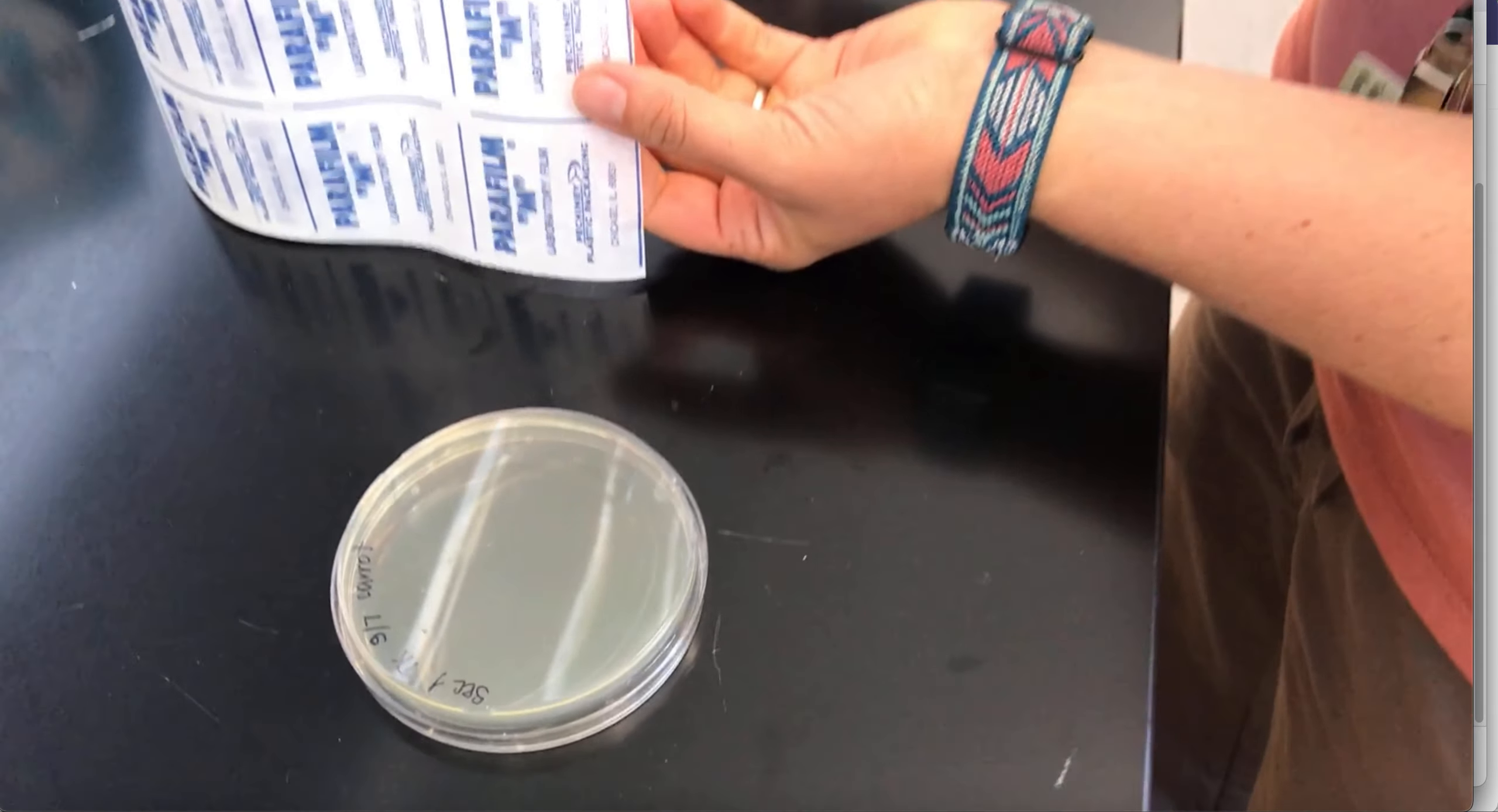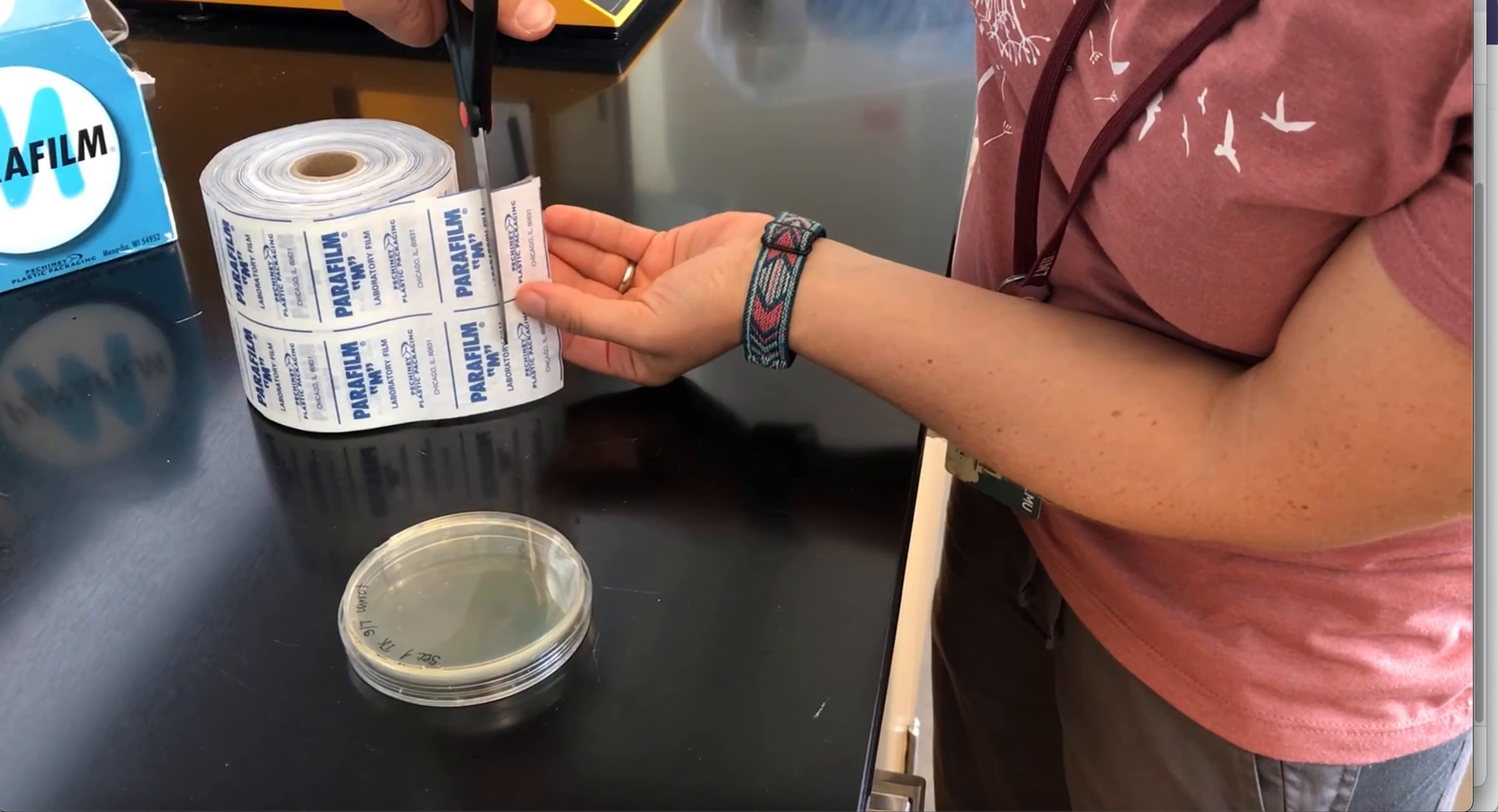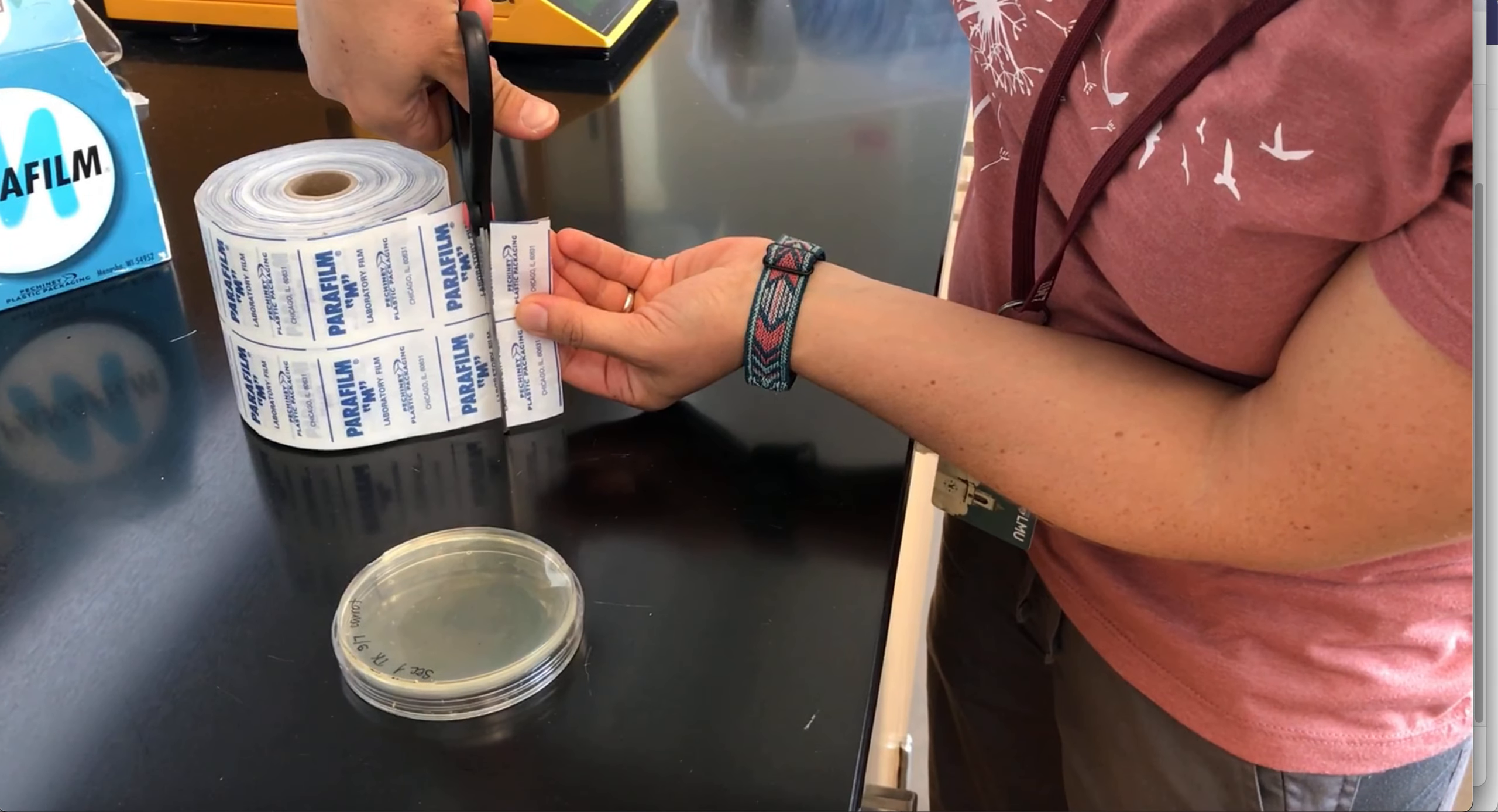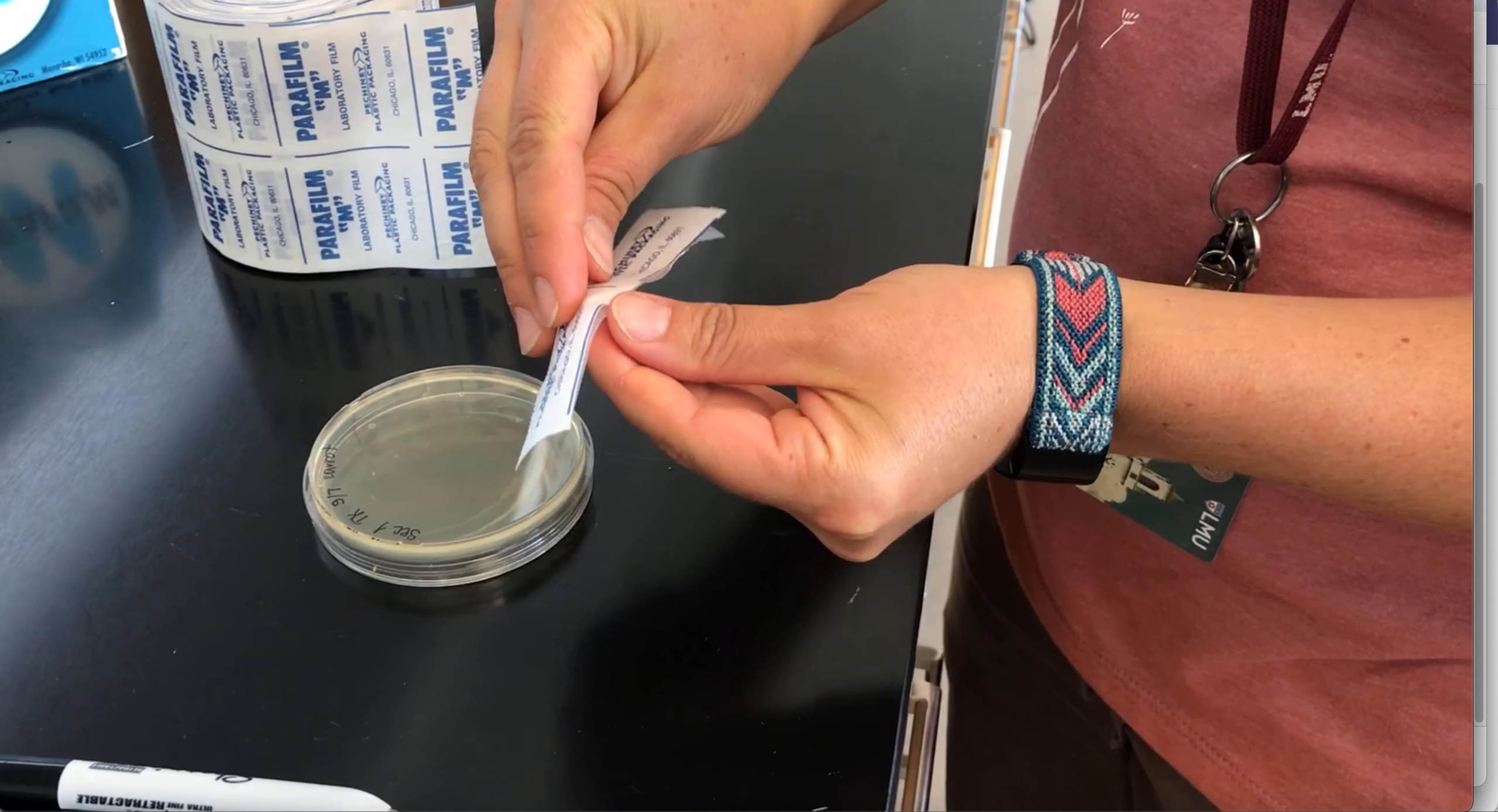Now I'm going to demonstrate how to parafilm the plate. Cut a half square width, double side piece of parafilm.